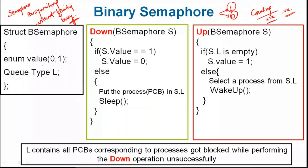In the binary semaphore solution, we have an enumeration variable which can take two values — zero or one. We also have a queue: whatever process is blocked and cannot get the critical section currently is placed in that queue. Now let's look at the down operation. Down is executed when we require entry to the critical section. Down is performed to check whether the critical section can be allowed at that moment.